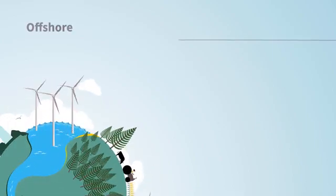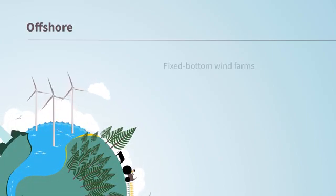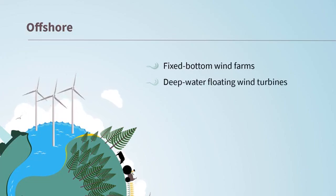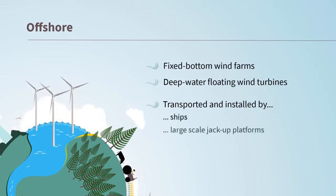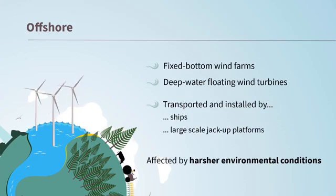Offshore applications on the other hand are fixed bottom or deep water floating wind turbines. Their transportation and installation is done by ships and large-scale jack-up platforms. Due to their larger turbine sizes, this type of wind turbines is likely to be affected by harsher environmental conditions.